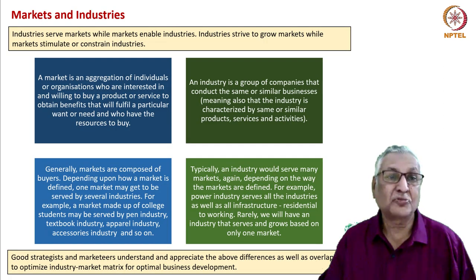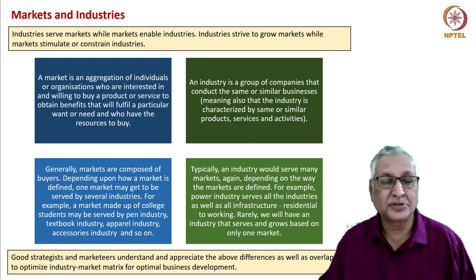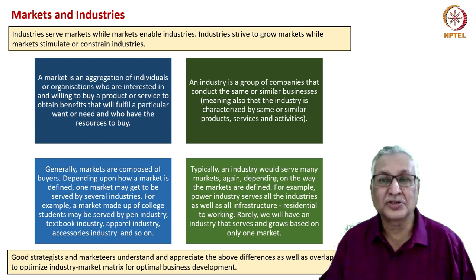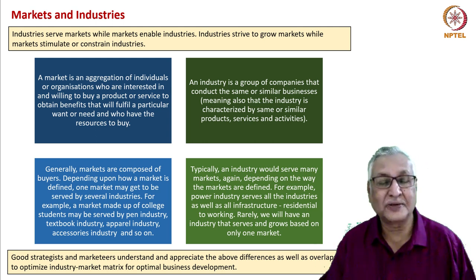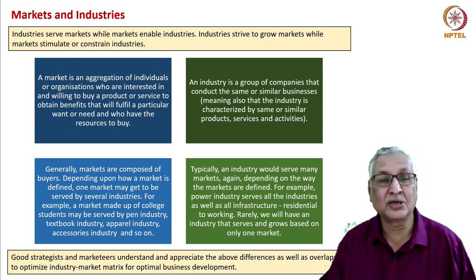Industries serve markets through the products that the companies in the industry provide. Markets enable the industries through the demand they provide for individual companies. Thus industries work to grow the markets, while markets stimulate or constrain industries depending upon whether the industry is faced with increasing or decreasing demand.